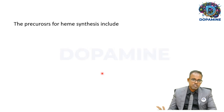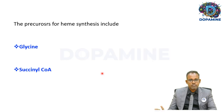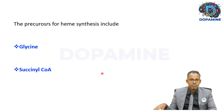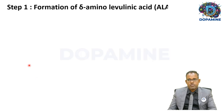The precursors for heme synthesis are two things: glycine, which is an amino acid, and succinyl-CoA, which is an intermediate of the TCA cycle. These are the starting materials for heme synthesis.